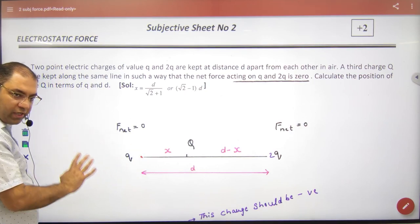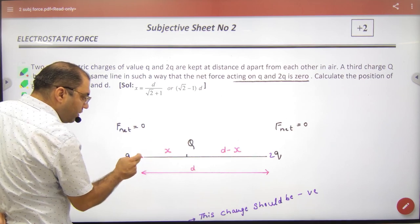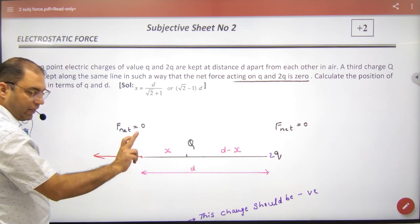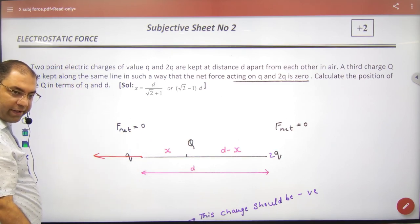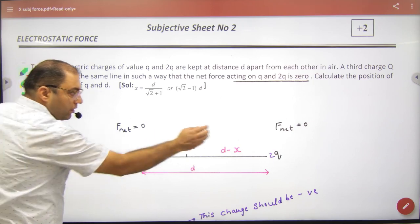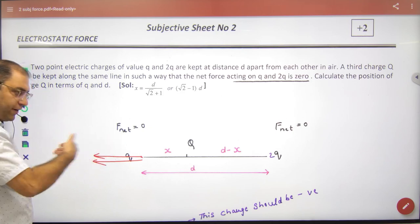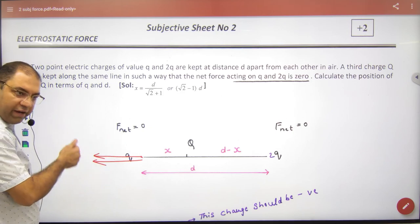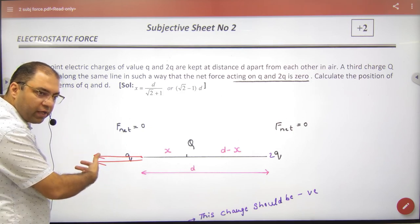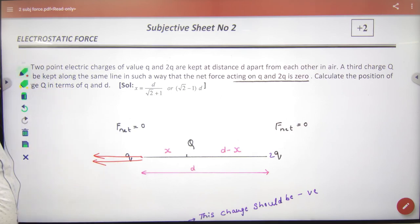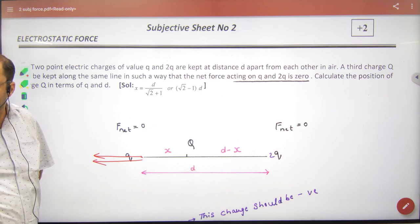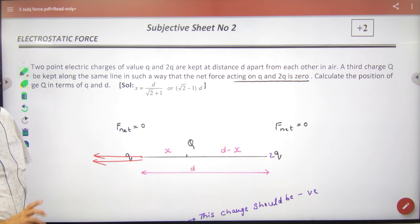I drew all vectors on this first. This capital Q will repel small q, so vector will be here. This positive will repel that positive, so vector will be here. Two vectors are left, both add up - they cannot give zero answer. Both are left, so forces will add. Forces add, so answer won't be zero. So it's not possible.